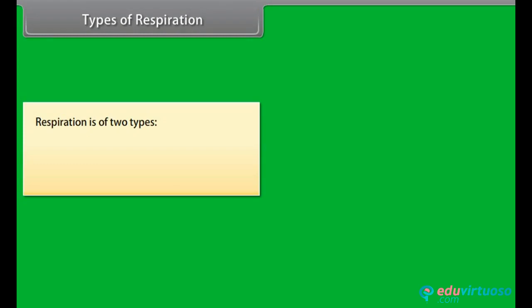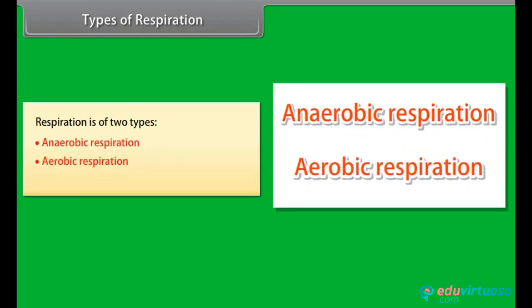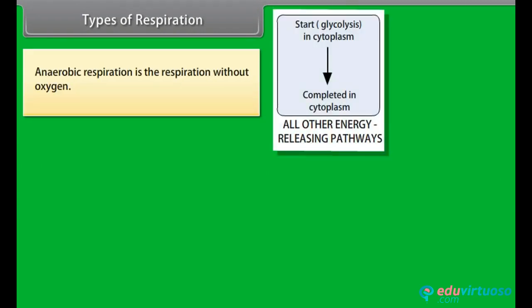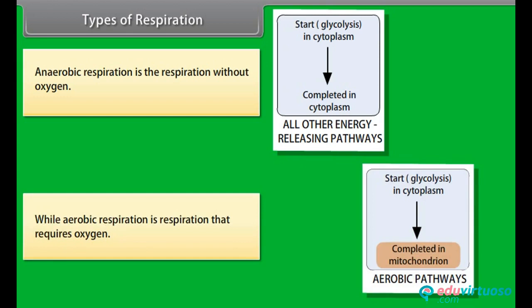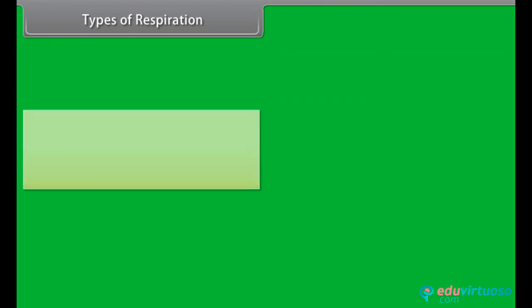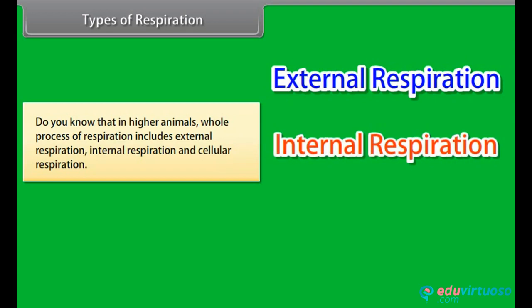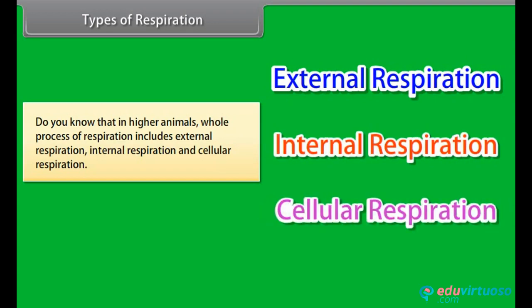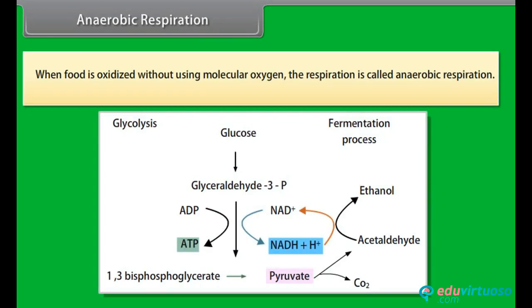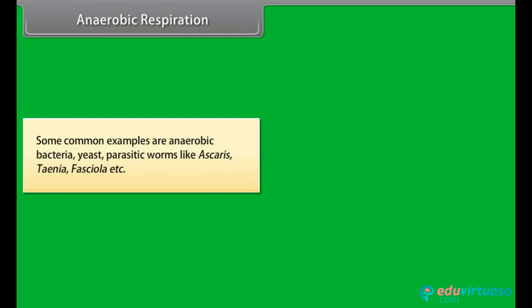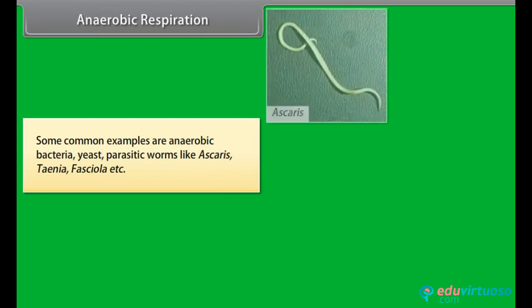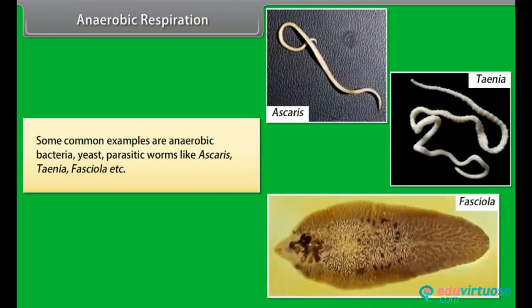Types of respiration: Respiration is of two types — anaerobic respiration and aerobic respiration. Anaerobic respiration is respiration without oxygen, while aerobic respiration is respiration that requires oxygen. In higher animals the whole process of respiration includes external respiration, internal respiration and cellular respiration. Anaerobic respiration occurs when food is oxidized without using molecular oxygen. Some common examples include anaerobic bacteria, yeast, and parasitic worms like Ascaris, Taenia, and Fasciola.